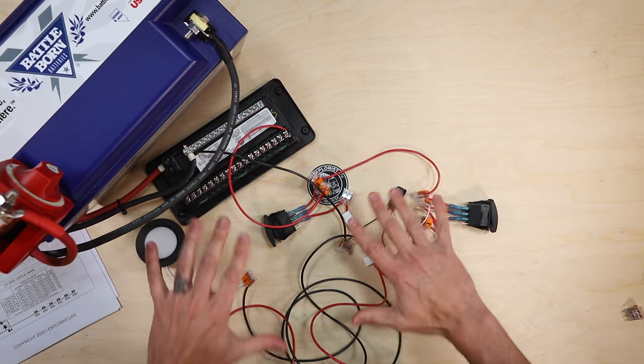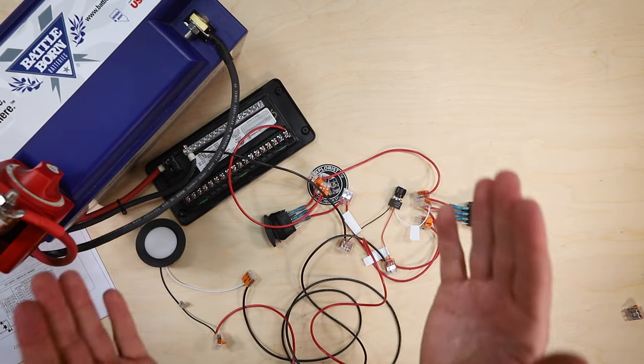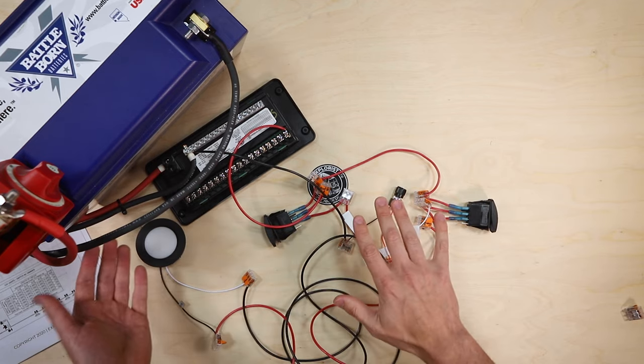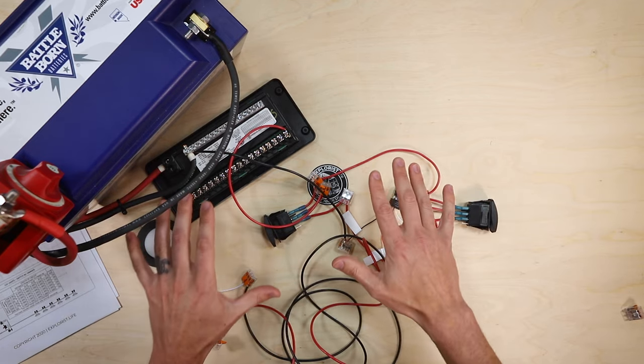So now that we know all of that, we are going to take this circuit and we are going to install it in the van. We're going to run all the wires and then circle back around and show you how all this actually looks installed in the van.